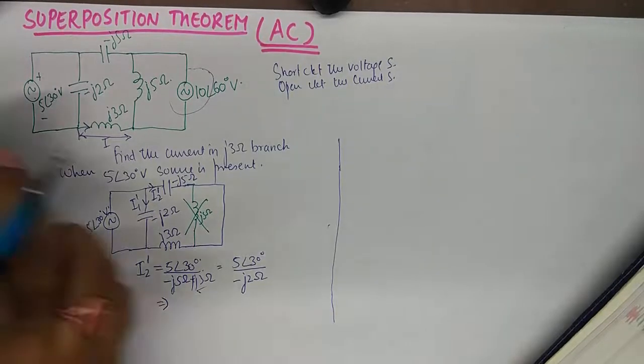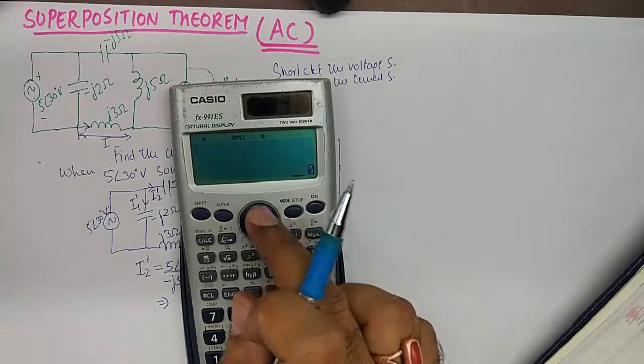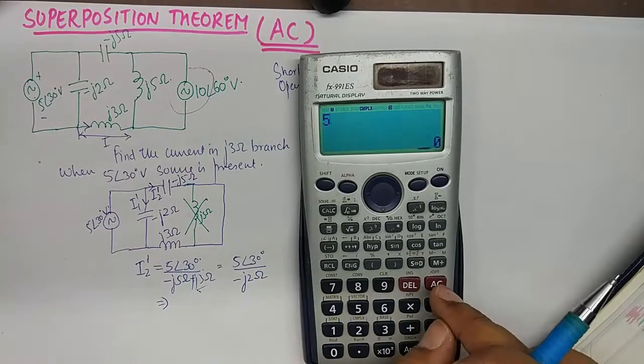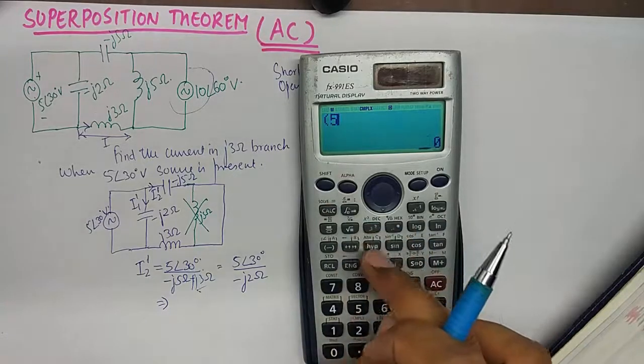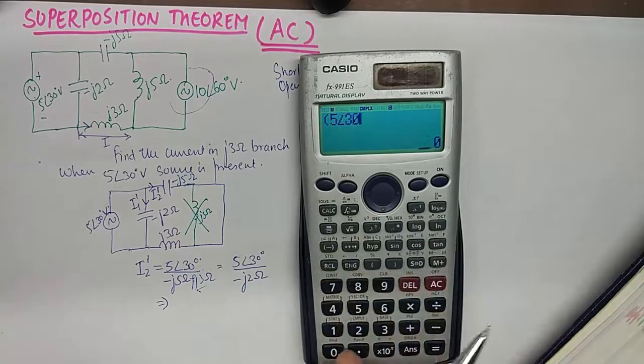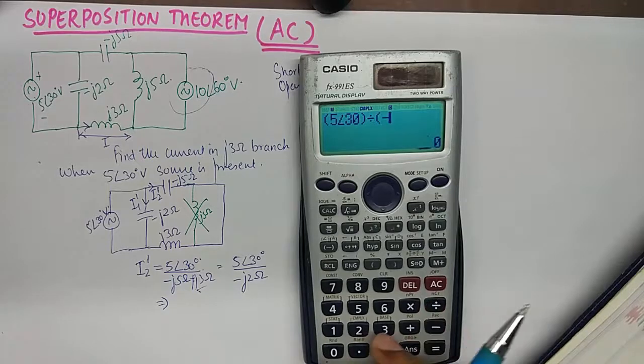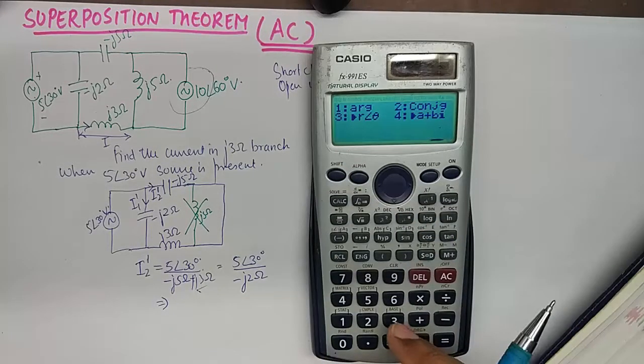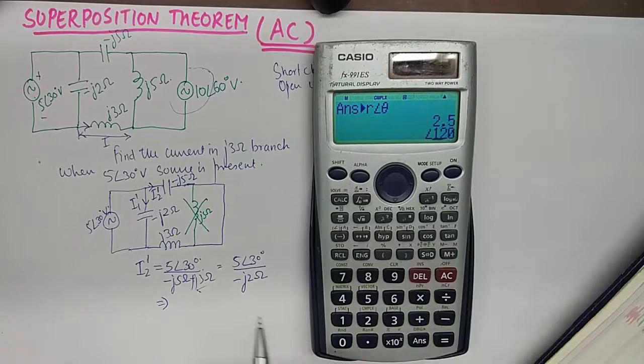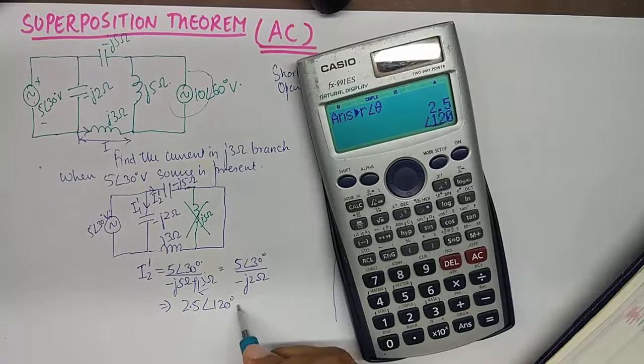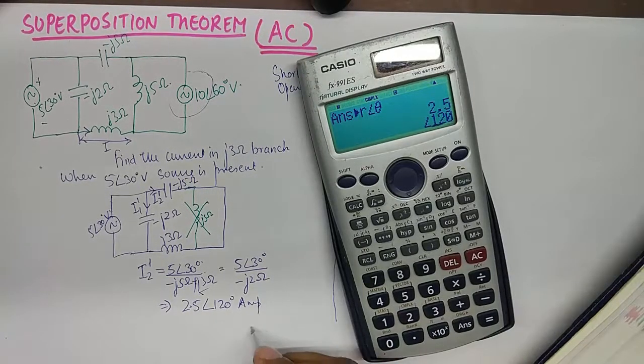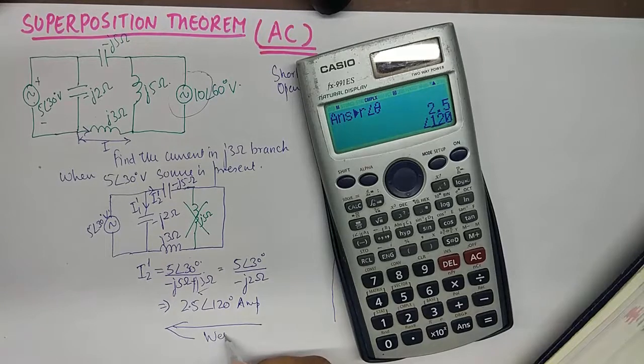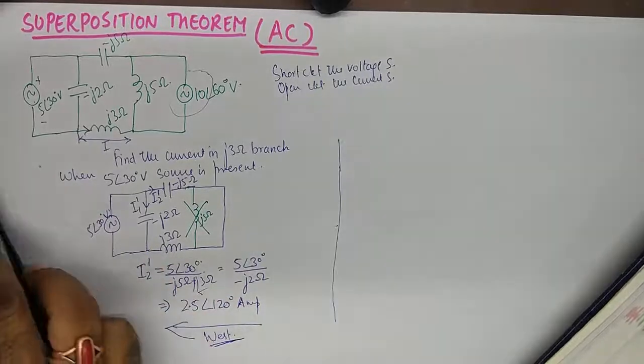Now this can be calculated using this calculator. We'll go to mode. We'll turn the calculator on, go to mode and select 2 to go into complex mode. Then we'll say 5. It's always better to put everything in brackets. So I'll use 5 angle 30 divided by minus 2 iota which gives me this value but I'll want to convert this into polar form. So I get 2.5 angle 120 degrees ampere. So the direction of this current would be in this direction or it is flowing in the west direction I would say. So half the work is done.